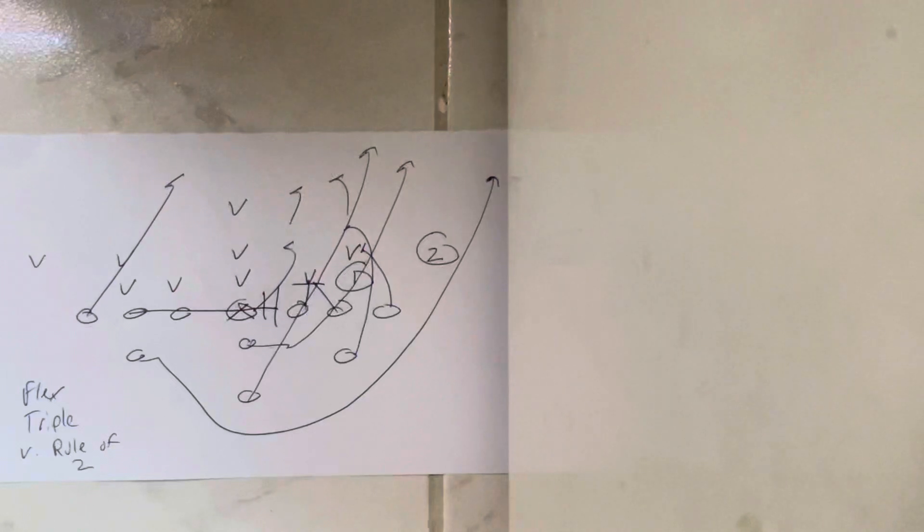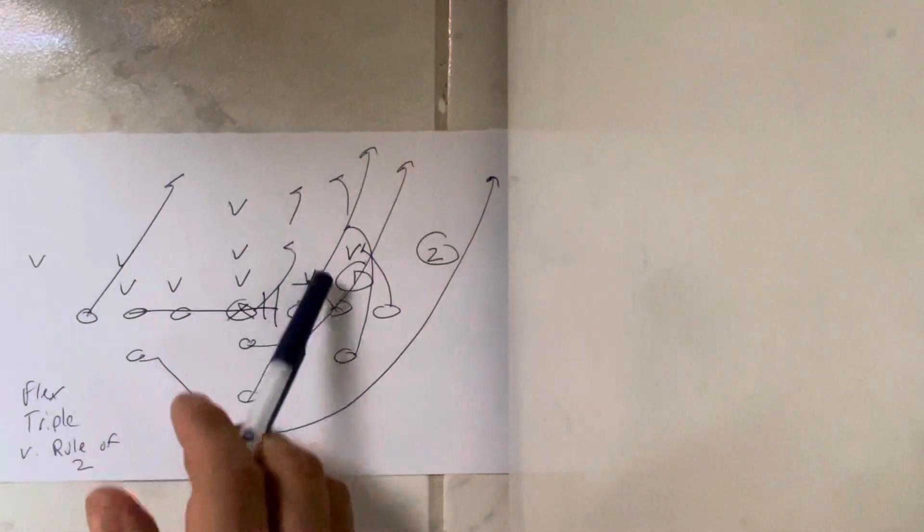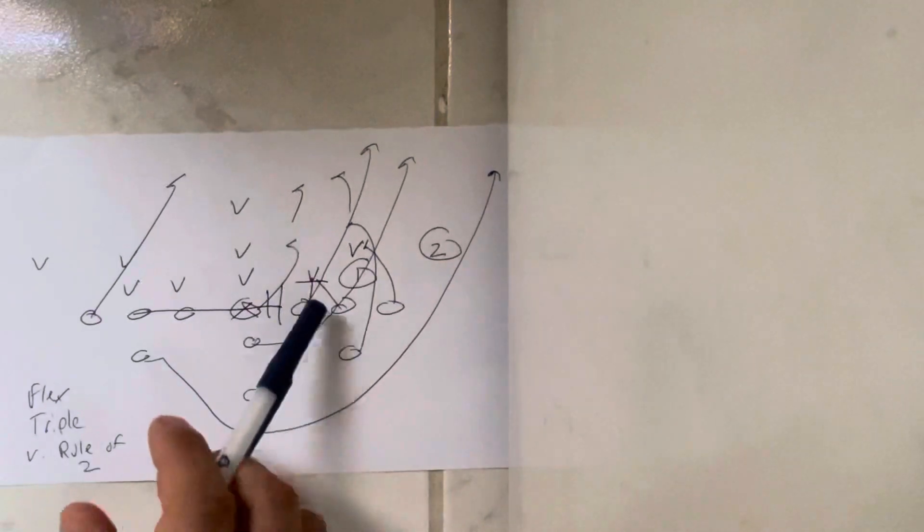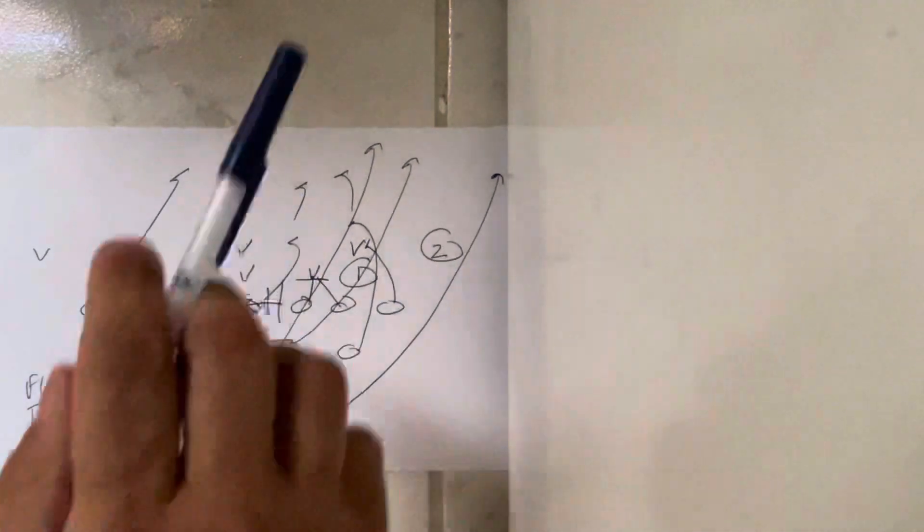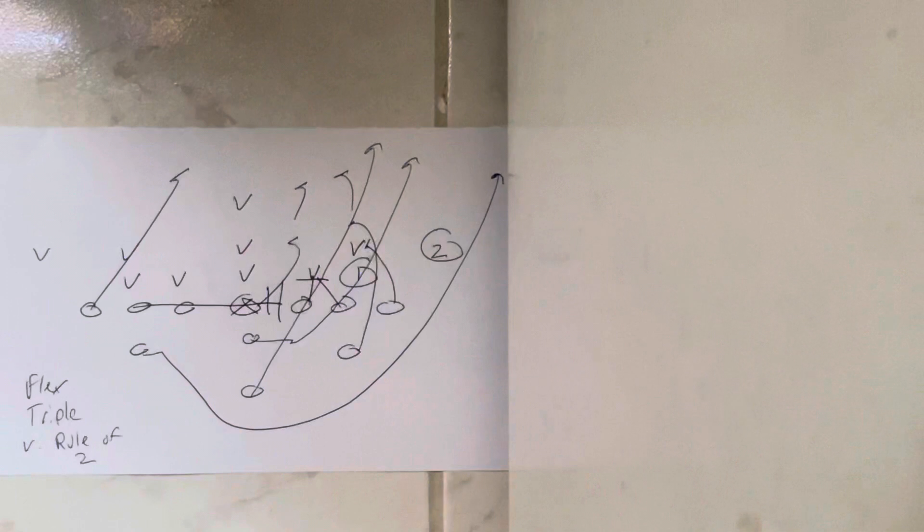So the first thing you do is you run zone dive. You're going to triple team the three technique, the A-back wedges with the tackle, you hand the ball off. If this guy is stupid enough to come into the wedge, which in high school you never know he might be, then you start reading him because who cares? Because at that point you're going to be off tackle or outside anyway.